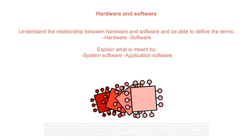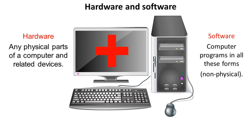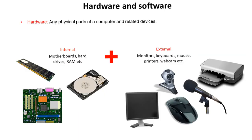In this video we understand the relationship between hardware and software, and you should be able to define the terms. We explain what is meant by system software and application software. At a simple level, absolutely everything involved in any computer — whether it be a smart watch, a phone, a tablet, or a desktop computer — consists of hardware, which are the physical parts of the computer and related devices, and software, which is the computer programs and all forms of anything non-physical.